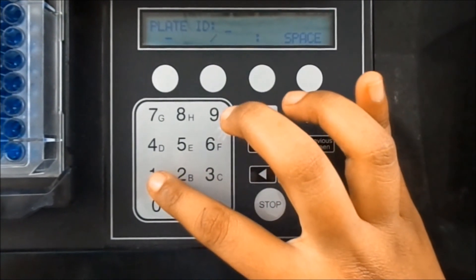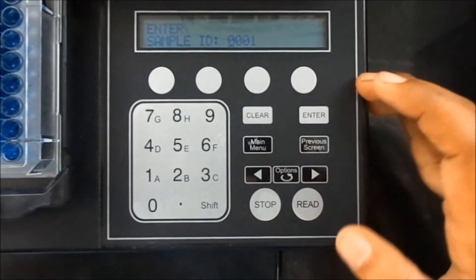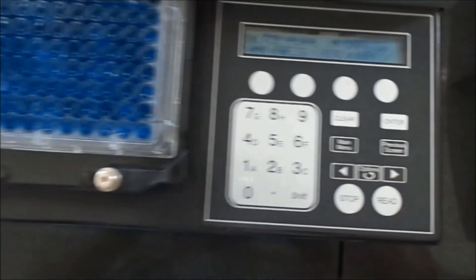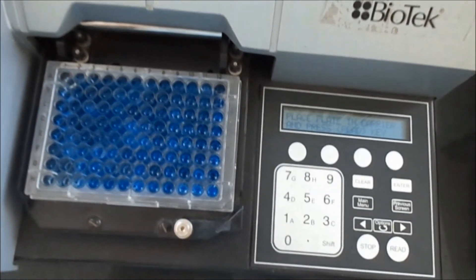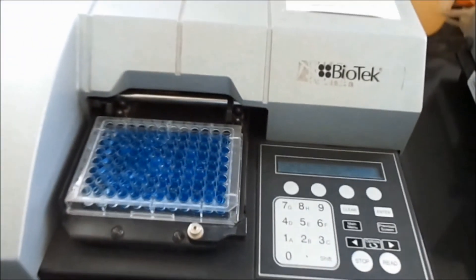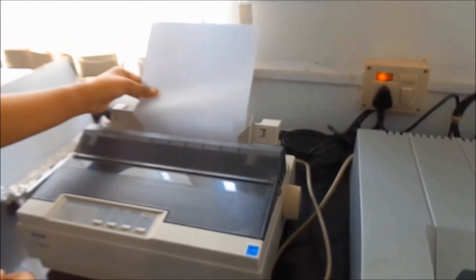The plate ID is given, and the sample ID is entered. The reading system will convert the signal into data and it is obtained in printed form.